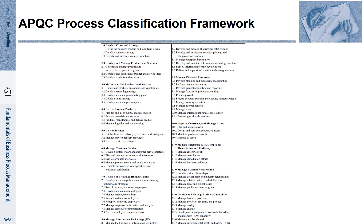The APQC framework distinguishes the strategic processes of developing vision and strategy, developing and managing products and services, marketing and selling products and services, delivering physical products, delivering services, and managing customer services — understood as managerial and core processes of many companies. There are also common support processes, starting with number 7: Develop and manage human capital; Manage information technology; Manage financial resources; Acquire, construct and manage assets; Manage enterprise risk, compliance, remediation and resilience; Manage external relations; and Manage business capabilities. These are more generic processes not so distinct for individual companies.